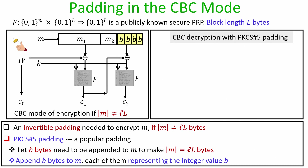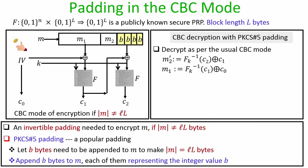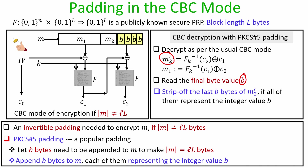For decryption, the receiver decrypts the last ciphertext block via CBC, recovers the padded last block, reads the last byte value to learn b, and checks whether the last b bytes all represent the integer value b. If so, strip off those b bytes to recover the original message. If not, an error has occurred and the receiver outputs a bad padding error.